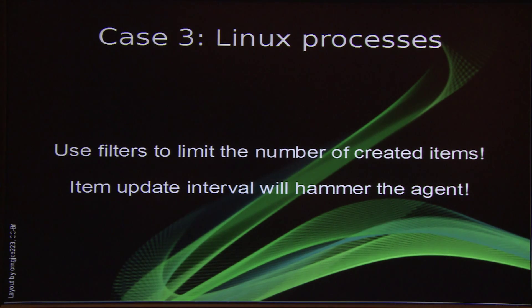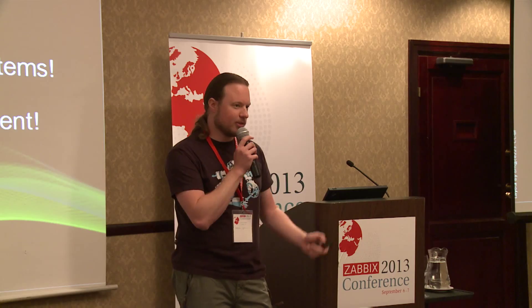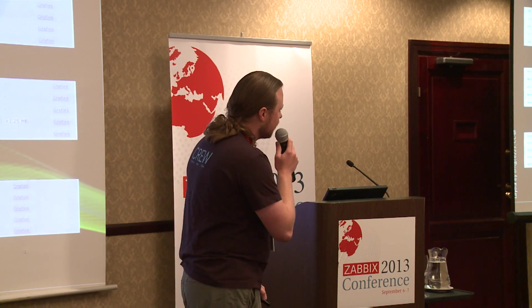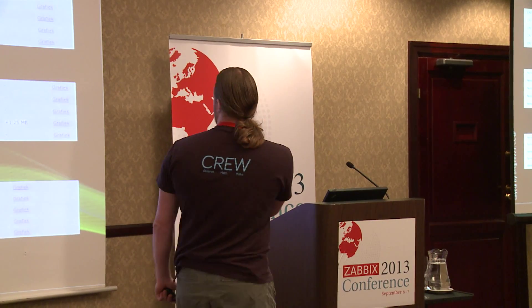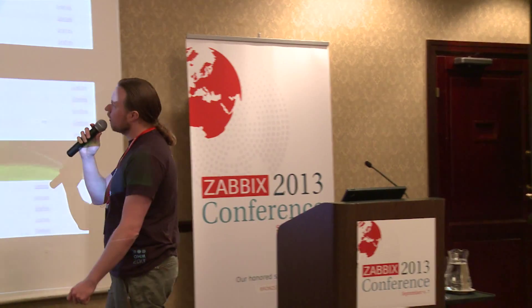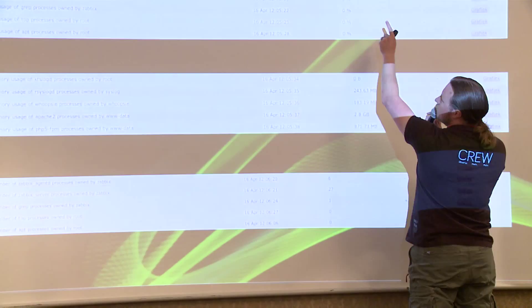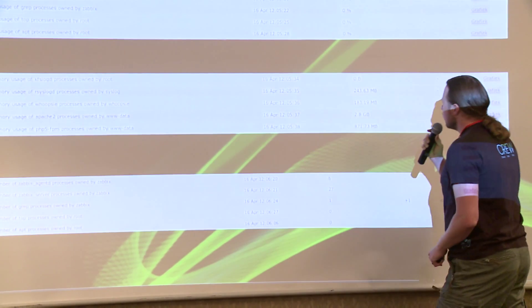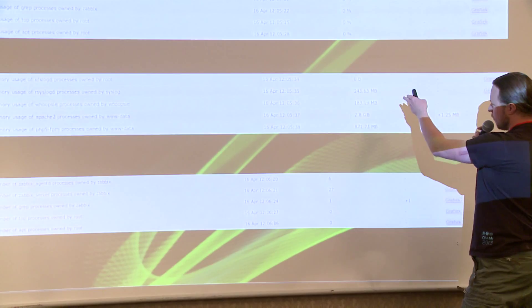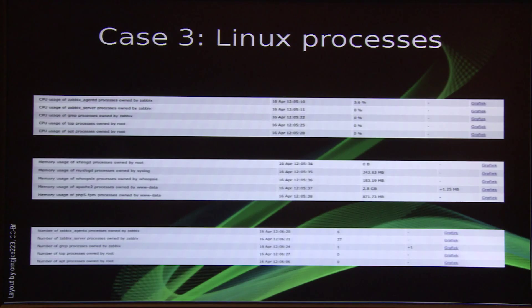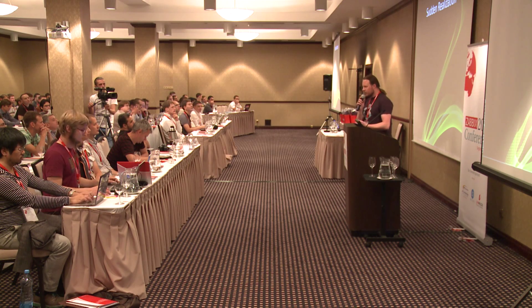If you want to have a look at this, please be my guest, but don't use it on a production system unless you know what you're doing. Here are some screenshots from the actual items that are generated. You can see the CPU usage for all of the processes owned by the user Zabbix — in this case 16% for the agent — the memory usage for the processes, and the number of processes.